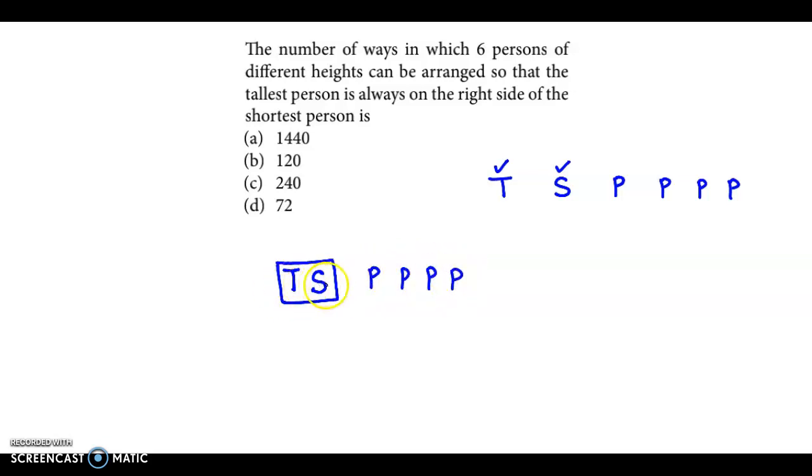So considering these two persons as one person and the remaining are 4 persons. So if this is considered as one person and these are considered as 4 persons, overall we have 5 persons.